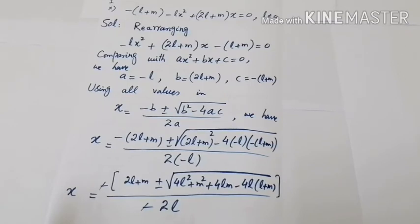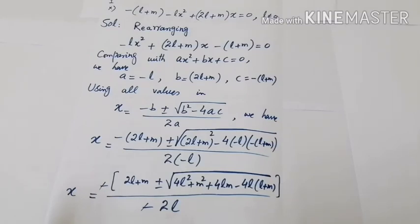Our next part is part number 10 of the same exercise. The question is: −(l+m) − lx² + (2l+m)x = 0, with the condition that l ≠ 0. Rewriting: −lx² + (2l+m)x − (l+m) = 0. This is in standard form. Comparing with ax² + bx + c = 0: a = −l, b = (2l+m), c = −(l+m).